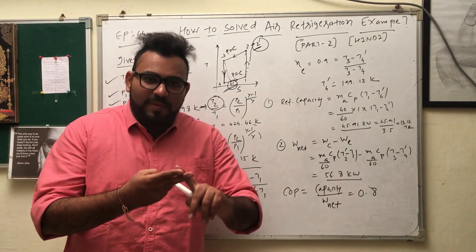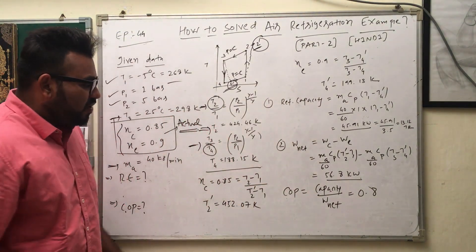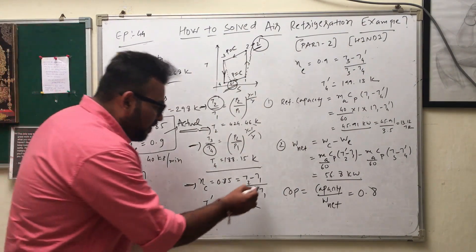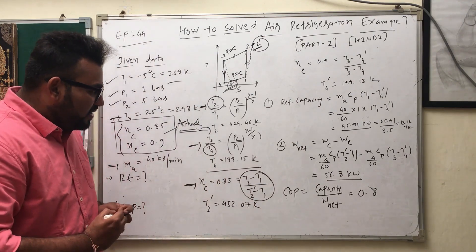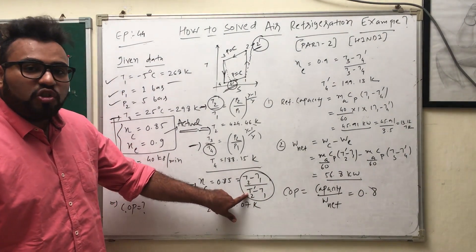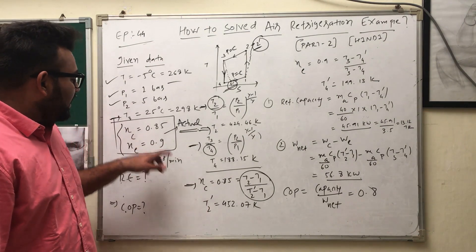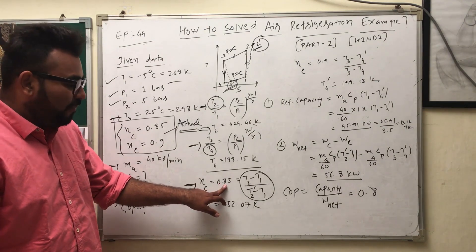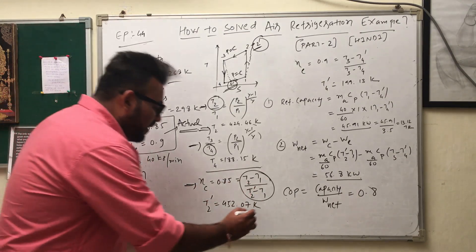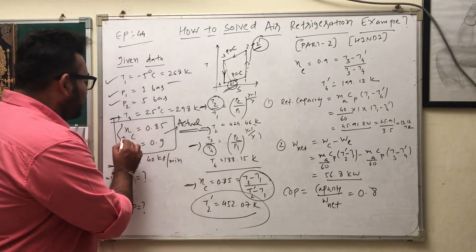Since the compressor efficiency is given, you use the compressor efficiency equation to find T2-dash. The formula for compressor efficiency is: η_compressor = (T2 − T1) / (T2_dash − T1). The isentropic compressor efficiency is 0.85. With T2 and T1 known, you can find T2-dash — the actual temperature after compression.